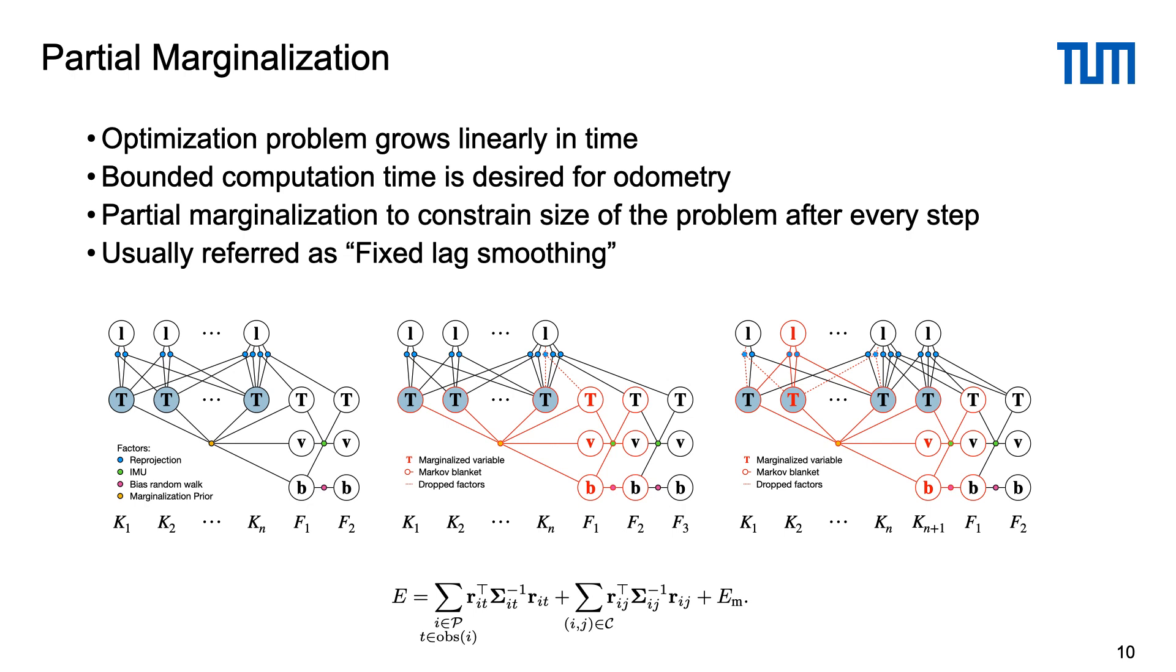To keep the computation budget fixed we remove old frames and keyframes from the optimization problem by employing partial marginalization. This technique is also known as fixed lag smoother.